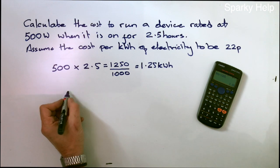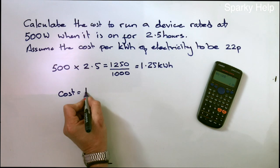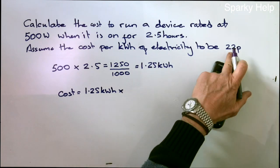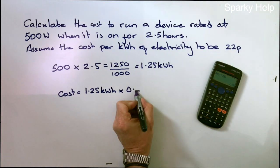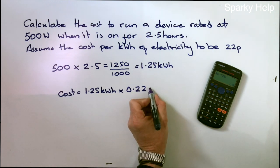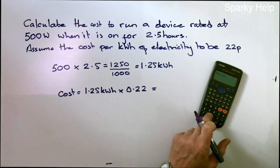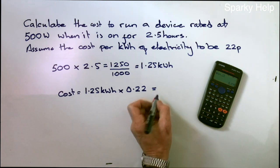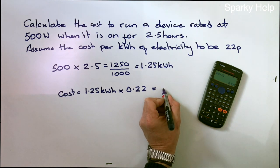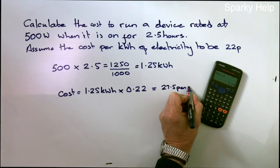So to work out the cost, 1.25 kilowatt hours multiplied by the cost. Let's put it in as 0.22. So your answer comes out in pounds. So our actual answer is 27.5 pence.